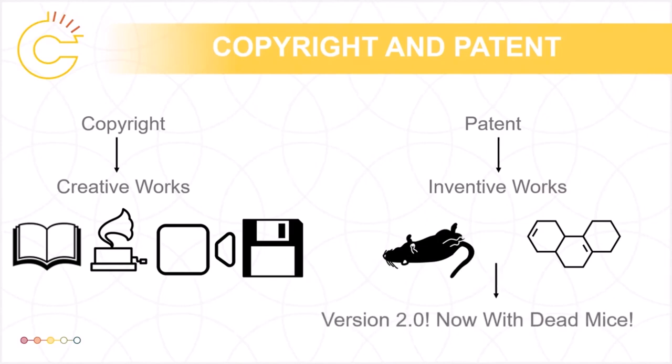Compared to copyright, patents have shorter terms of protection, fewer exceptions for unauthorized use, and are granted by a national patent office, whereas copyright protection is automatic. Patents are the oldest modern form of intellectual property, with the first patent statute being passed by the city-state of Venice in 1474.